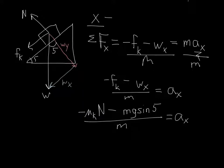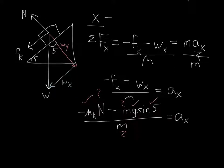Taking stock of what I need: I know mu_k, so that's fine. I need to figure out the normal force. I don't know the mass, so maybe I need to find it — but let's see. G is 9.8, and I know sine of 5. There are some numbers I still need to find. I'm done with what I can extract from the x direction, so let's switch to the y direction.